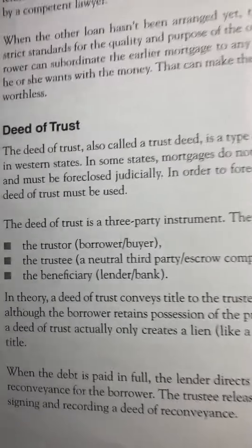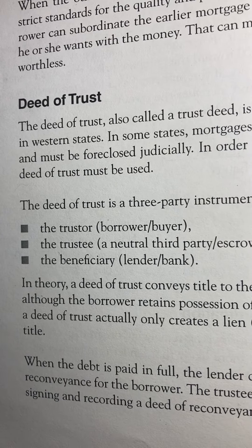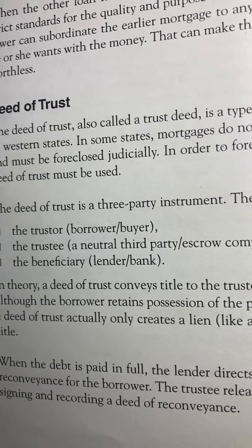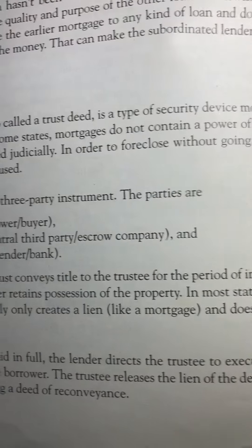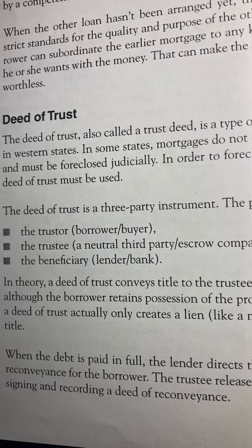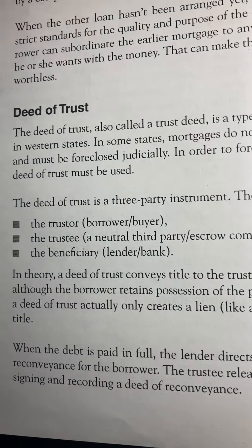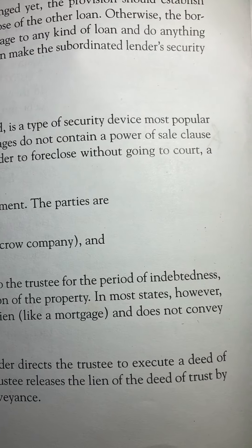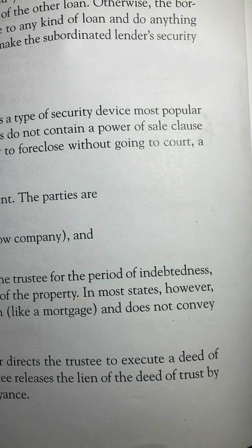The parties are the trustor, which means the borrower/buyer; the trustee, who is a neutral third party or escrow company; and the beneficiary, who is the lender/bank. In theory, a deed of trust conveys title to the trustee for the period of indebtedness.